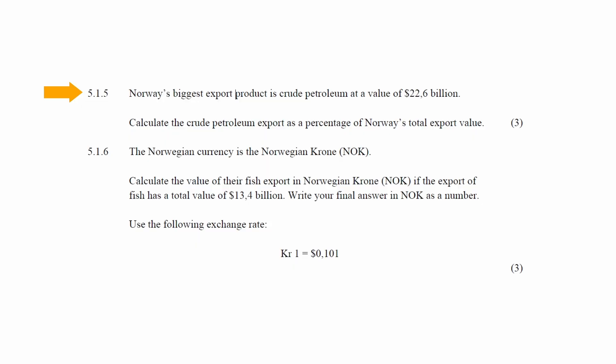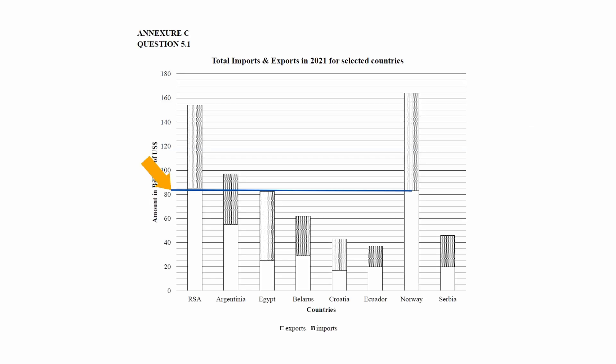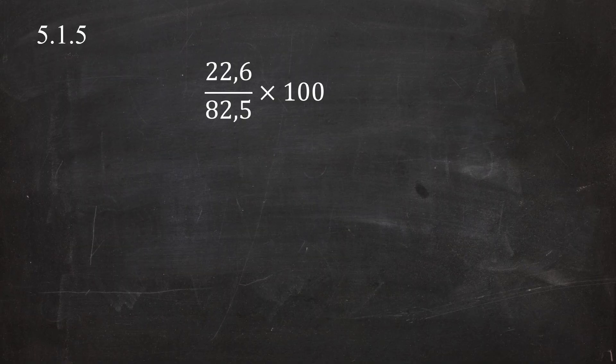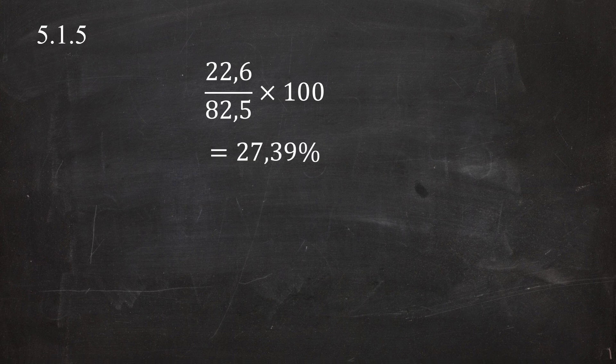In Question 5.1.5, it is stated that Norway's biggest export product is Crude Petroleum at a value of 22.6 billion U.S. dollars. You are instructed to calculate the Crude Petroleum export as a percentage of Norway's total export value. From the graph, we see that the total export value of Norway is 82.5 billion U.S. dollars. So Crude Petroleum export as a percentage of Norway's total export value is 22.6 divided by 82.5 multiplied by 100, which equals 27.39%.